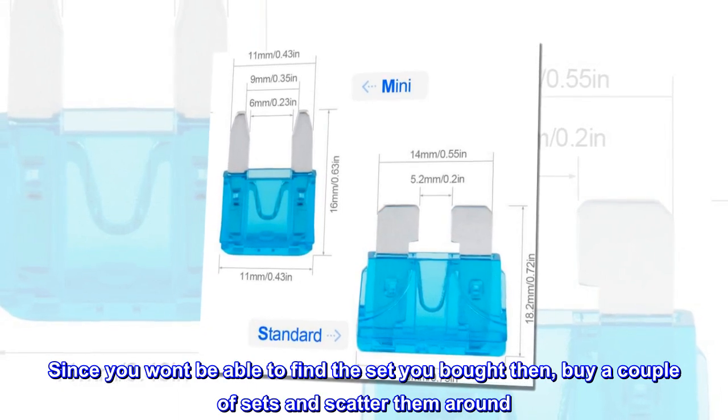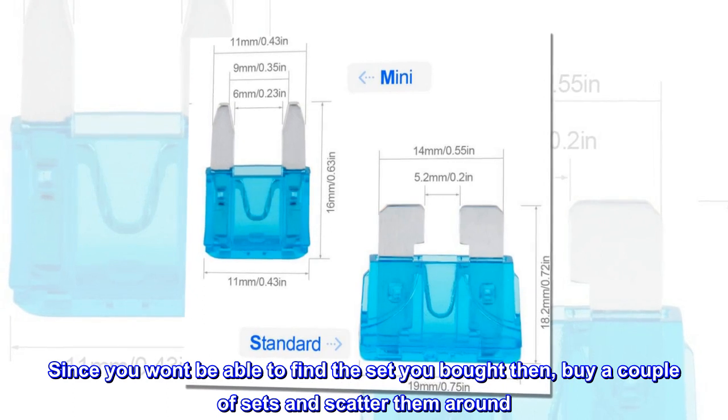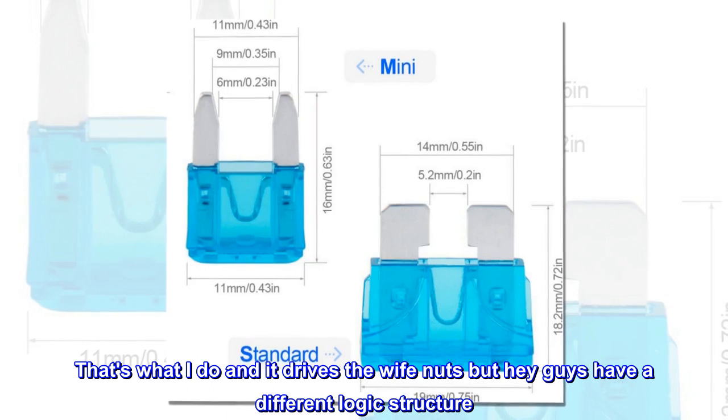Since you won't be able to find the set you bought then, buy a couple of sets and scatter them around. That's what I do and it drives the wife nuts, but hey, guys have a different logic structure.